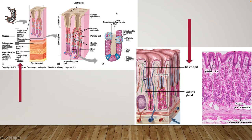Within the gastric gland, we have different cells: parietal cells, chief cells, enteroendocrine cells, and mucus neck cells. All of these produce different things and secrete them into the gastric pit, and from the pit they enter into the lumen of the stomach. We'll look at exactly what those products are and what they are needed for in terms of digestion.